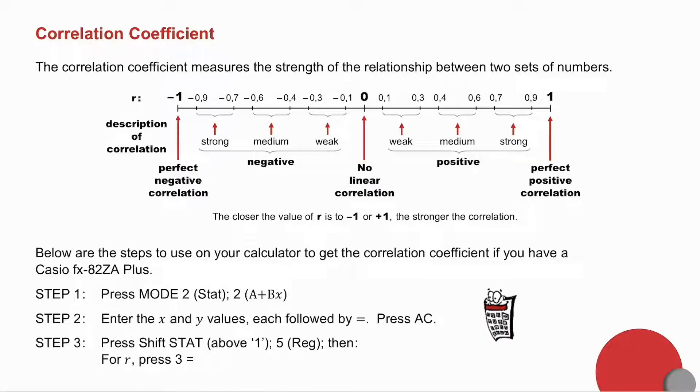The correlation coefficient measures the strength of the relationship between two sets of numbers. A correlation coefficient of minus one is a perfect negative correlation. Zero means there is no linear correlation, and an r value of one means it is a perfect positive correlation. Between zero and one, it's a positive correlation, and between zero and minus one, it's a negative correlation. The closer you get to one, the stronger the correlation is.